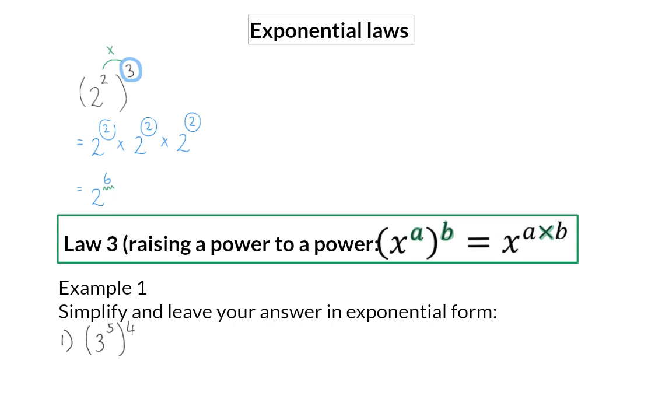Example 1. Simplify and leave your answer in exponential form. Here we have 3 to the power of 5 that is raised to the power of 4. And according to our law, we keep our base of 3 and multiply the two exponents. So that means we will have 3 to the power of 20.